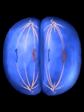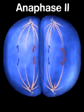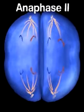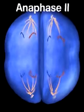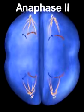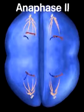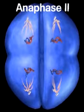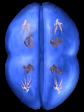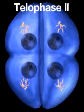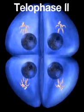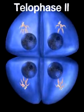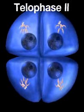Anaphase II begins as the centromere of each chromosome splits, allowing the sister chromatids to separate and move to opposite poles. During telophase II, nuclei reform, the spindle breaks down, and the cytoplasm divides.